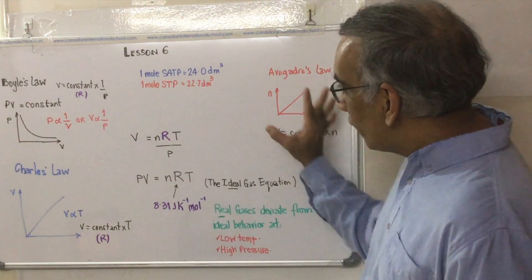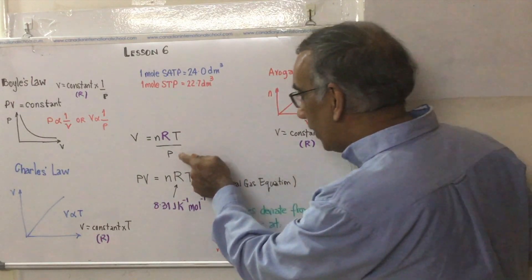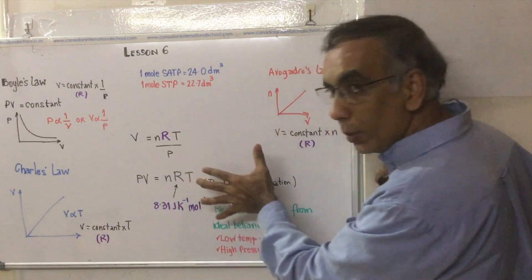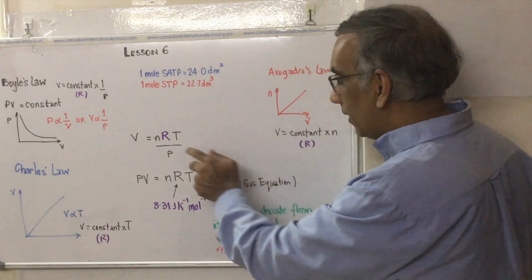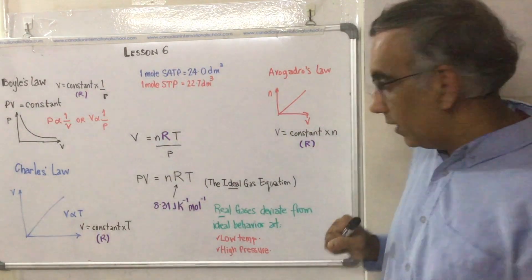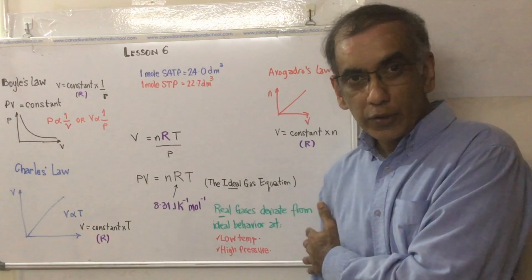So with all of those three fitting in to give you this, then we move the P from the denominator over to here by multiplying both sides of the equation by P. And that's going to give us P multiplied by V. PV equals NRT. That's called the ideal gas equation.